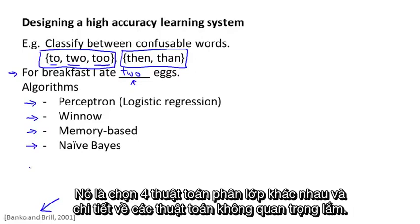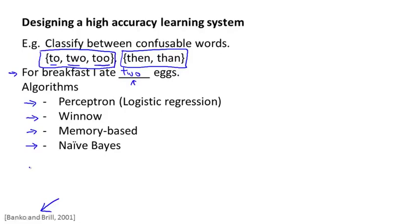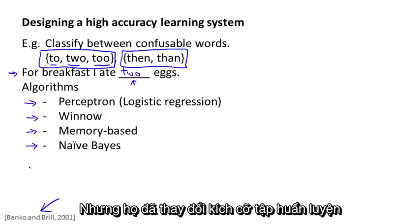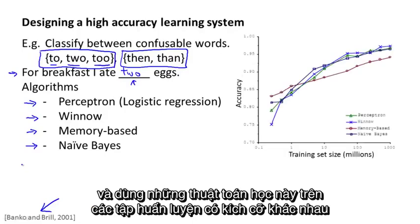The exact algorithms of these details aren't important. Think of this as just picking four different classification algorithms. But what they did was, they varied the training set size and tried out these learning algorithms on a range of training set sizes.